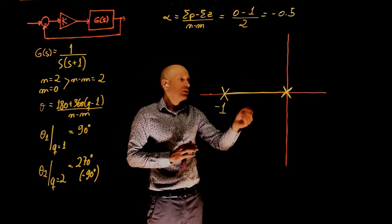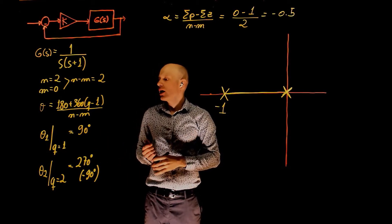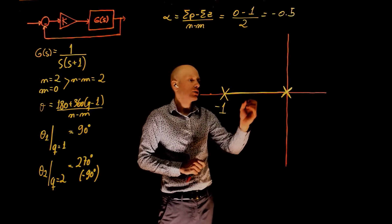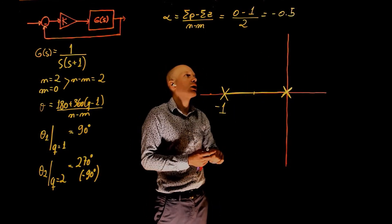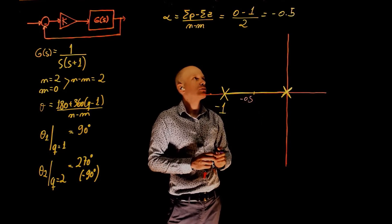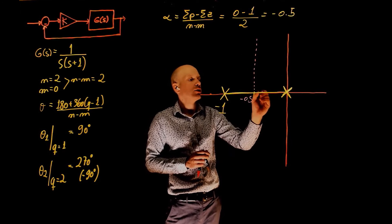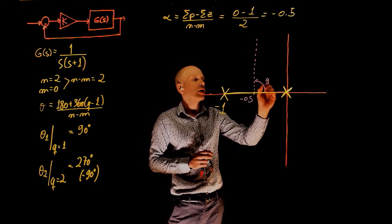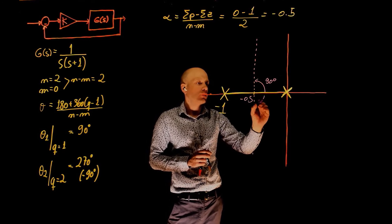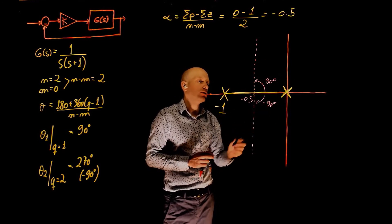These two poles now come together and will go to plus minus infinity following the asymptotes that have an angle of 90 and negative 90 degrees. The centroid of that asymptote is negative 0.5, so right here. One of the asymptotes has an angle of plus 90 degrees with respect to the real axis and the other one has an angle of negative 90 degrees or 270 degrees.